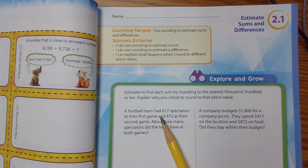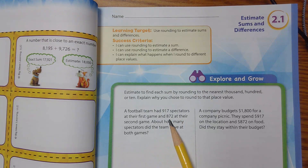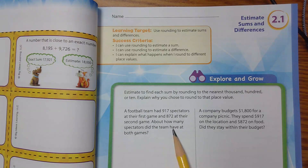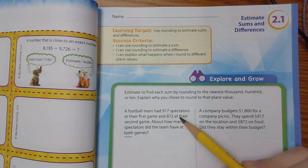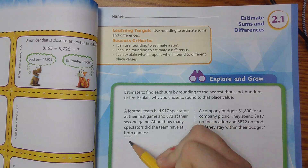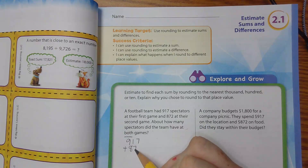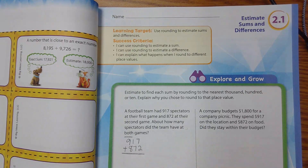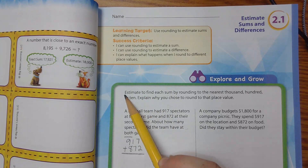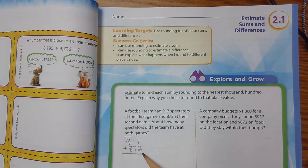A football team had 917 spectators at their first game and 872 at their second game. About how many spectators did the team have at both games? We see the word 'both' in here so we know we need to add these two numbers. But it says we're allowed to estimate, so that means we don't have to be specific — we can round. What place value do we think we need to round to?